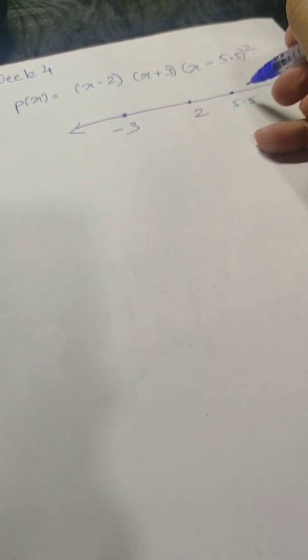So the whole polynomial will be positive. Any value greater than 5.5 will give positive value for p of x. Now what if we put anything in between these two values? Let's say 3.